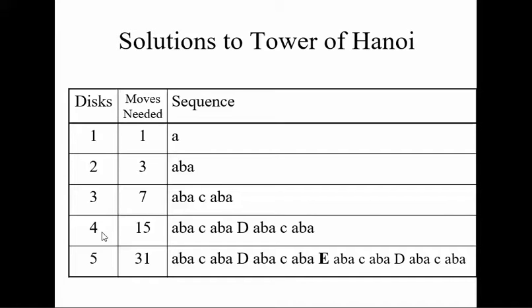If we have four disks, we have to move the three disks first using ABBA-CABBA. Then we move the fourth disk, which is disk D. Then we do the seven moves again, and we get our 15 moves. So it's ABBA-CABBA-DABBA-CABBA.